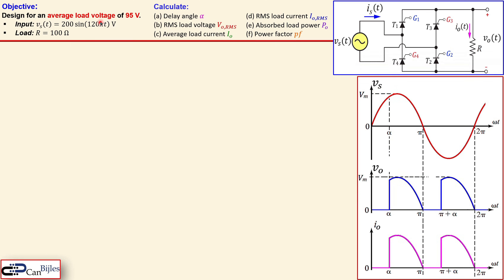Before we jump to our calculations let's first look at the waveforms. This is the input voltage Vs, which has a pure sine wave waveform. Looking at the output, we see that at angle alpha, gate 1 and gate 2 will be fired, meaning T1 and T2 will be conducting. The output voltage will come up and take the same shape as the source voltage.